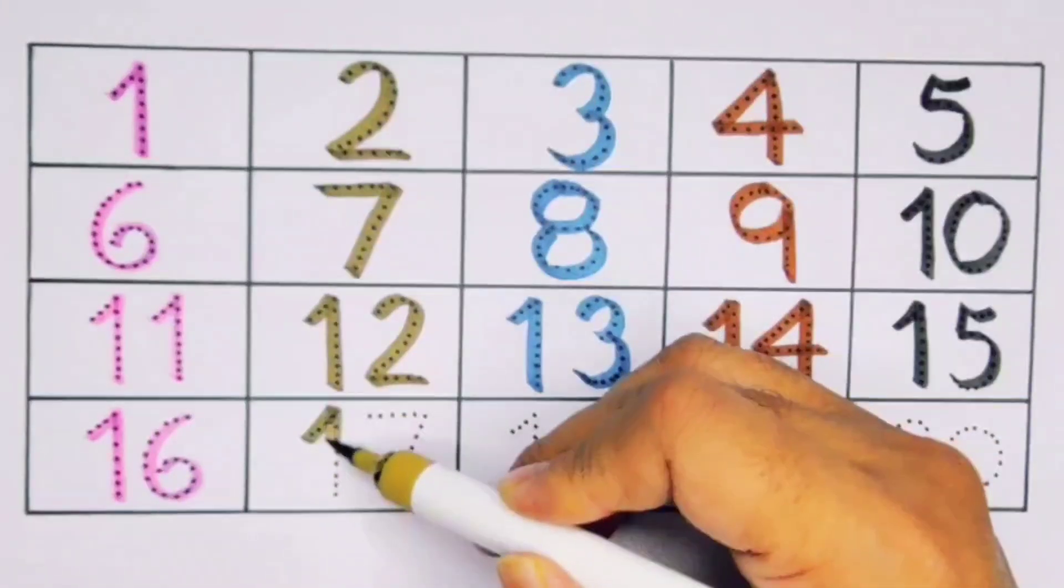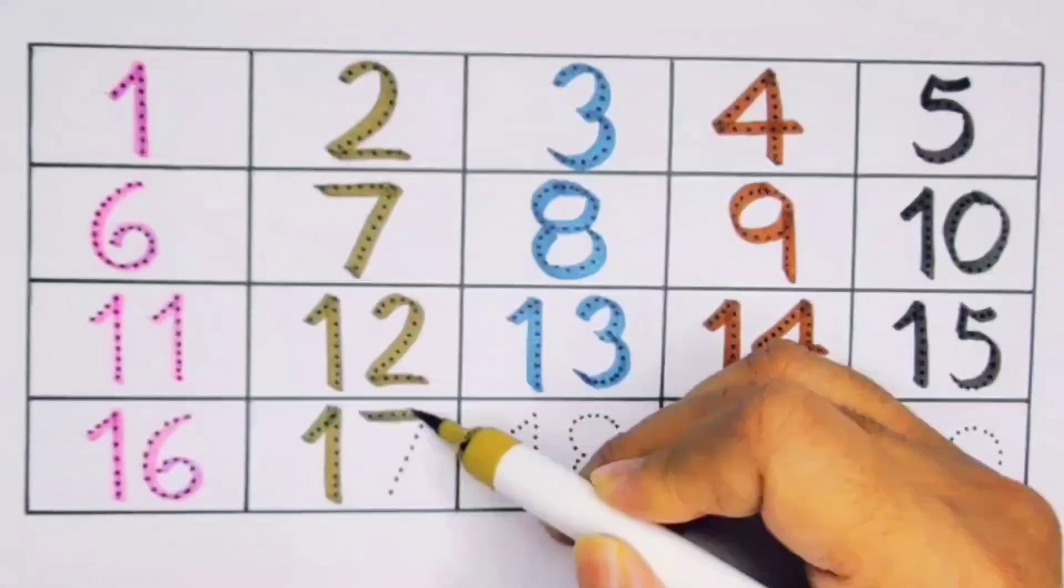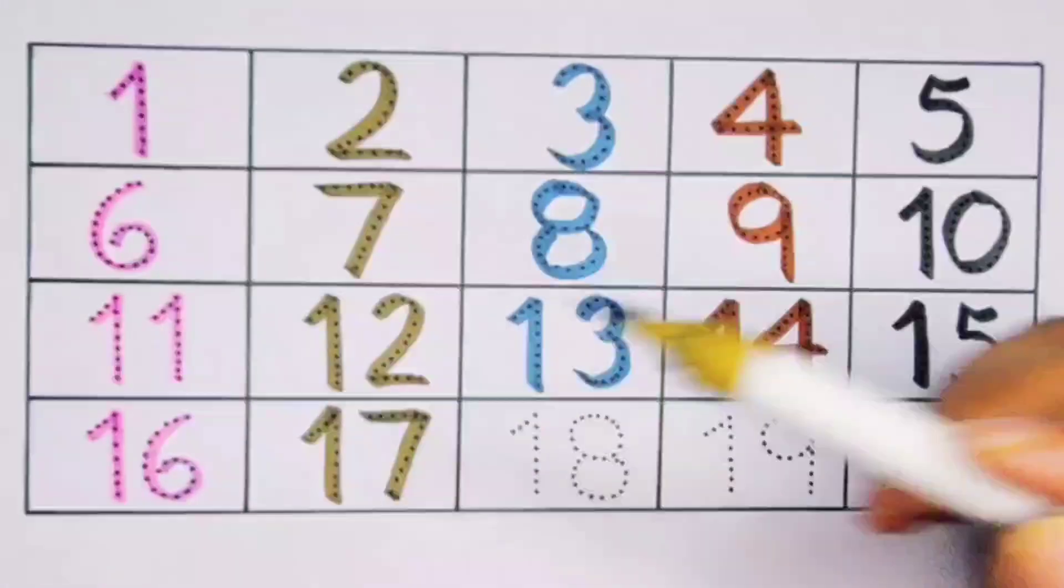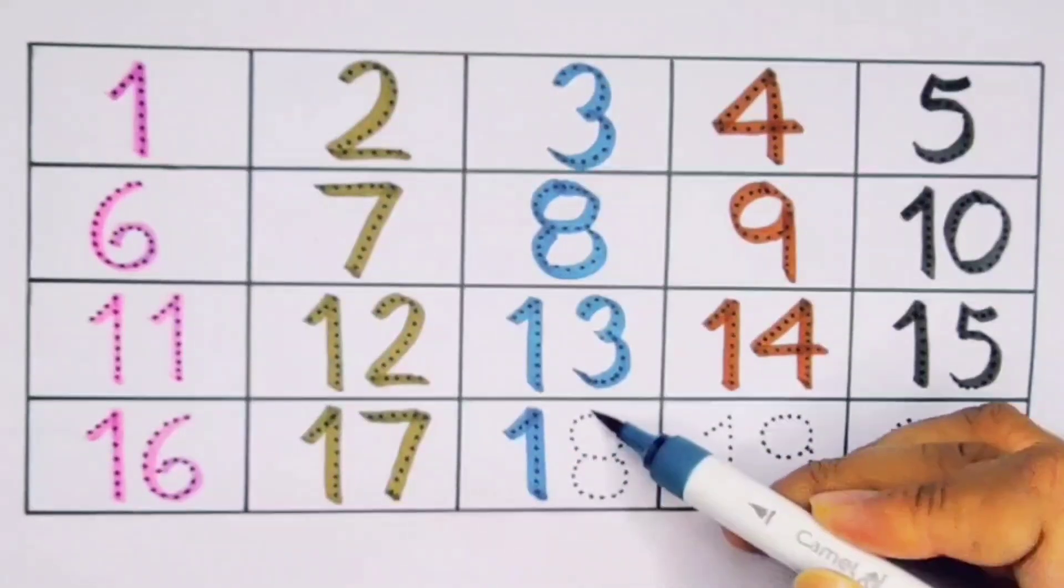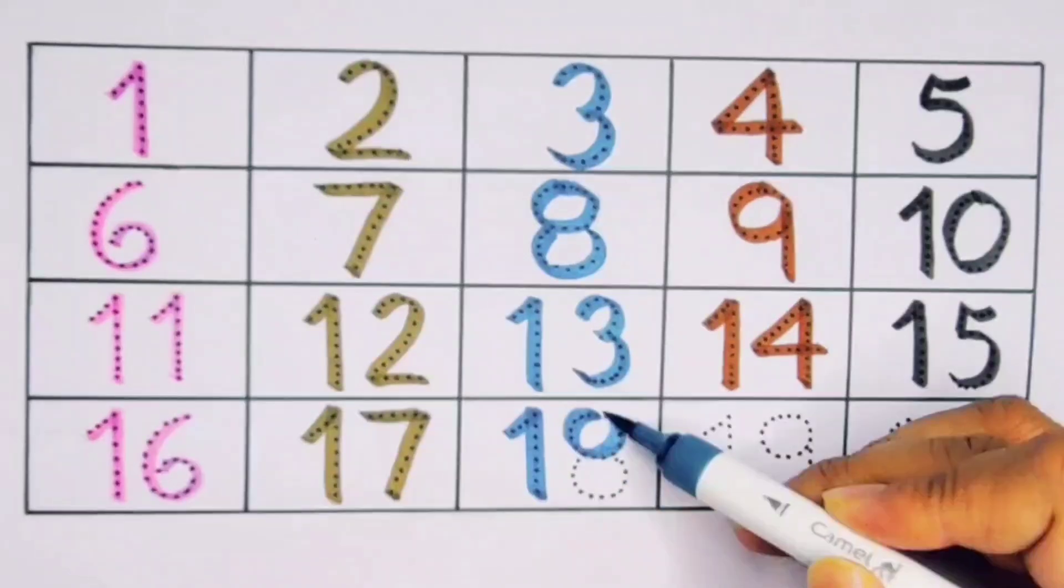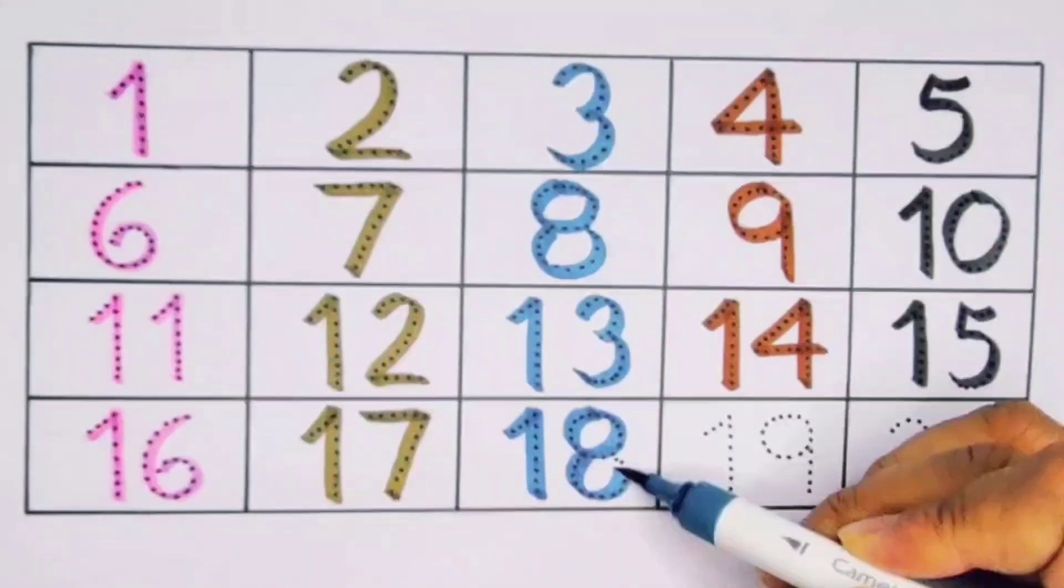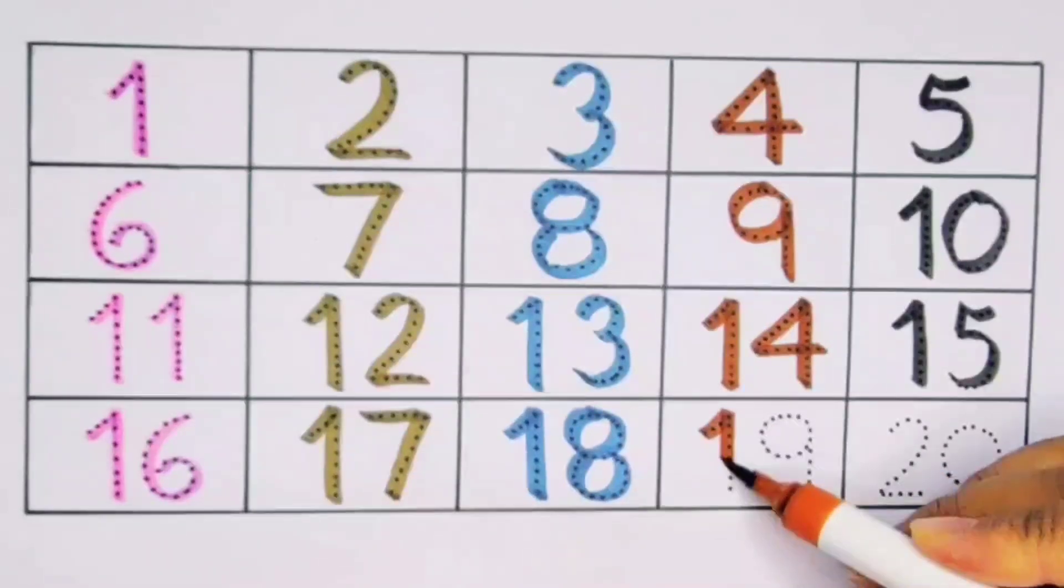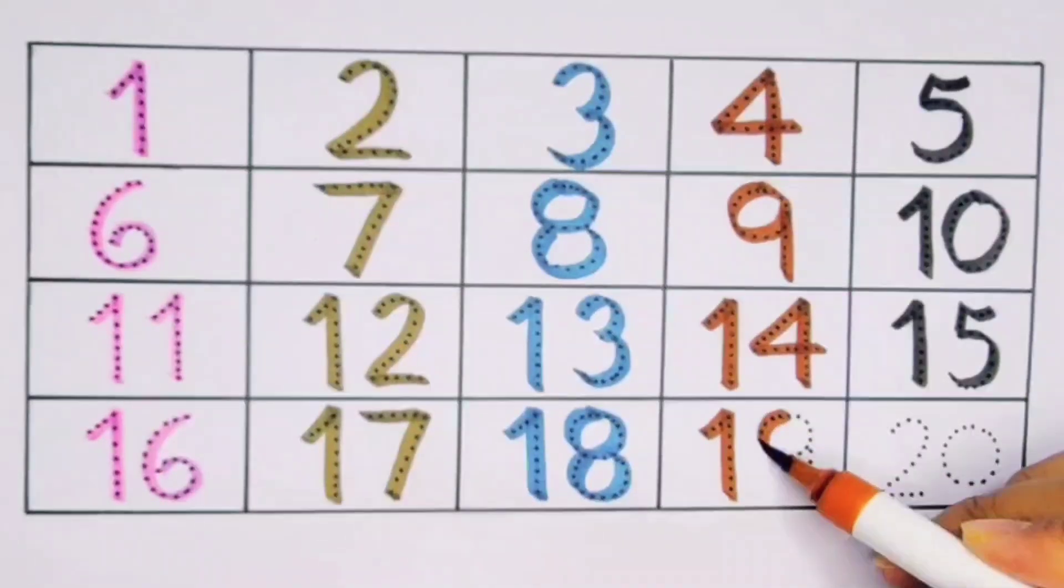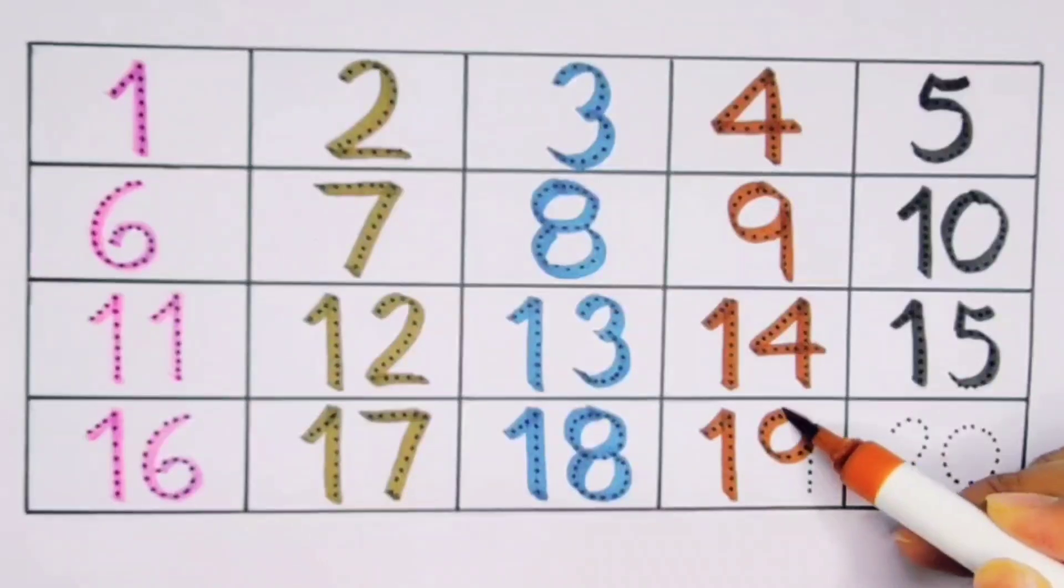Next, 17, 1-7, 17, number 17. Next, 18, 1-8, 18, number 18. Next, 19, 1-9, 19, number 19.